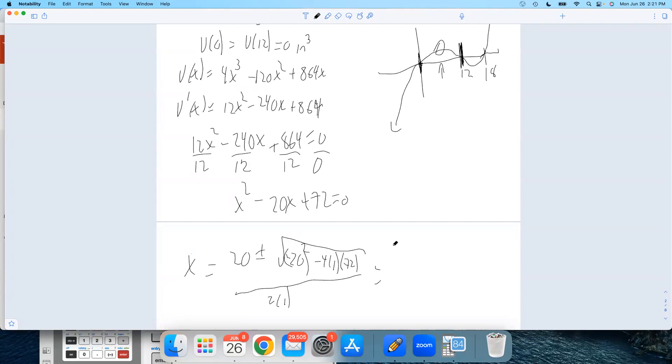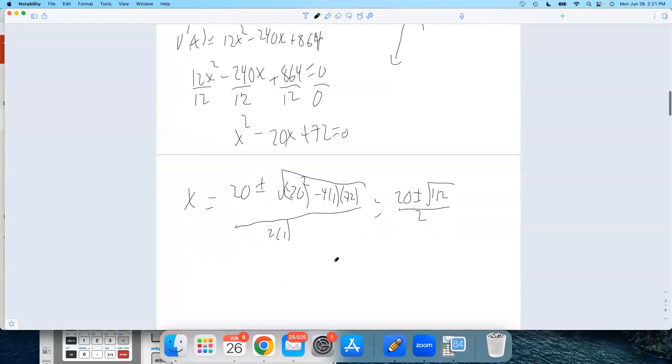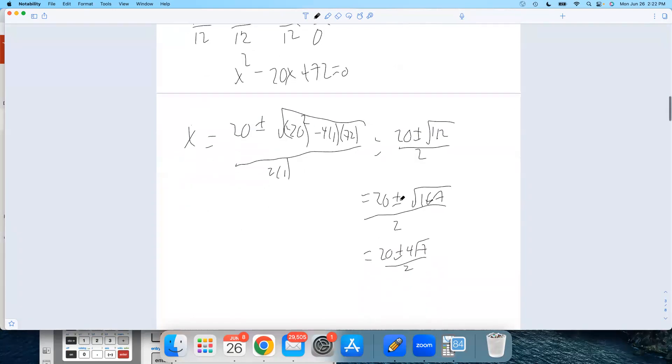And then, again, you can check all the math here. You're going to get 20 plus or minus the square root of 112 over 2. And again, I've already worked this out. So I know that that does simplify. Square root of 112 is square root of 16 times 7. Square root of 16 is 4. So I get 4 root 7 over 2. And then I'm always allowed to split up numerators. I could write that as 10 over 2, plus or minus 4 root 7 over 2.